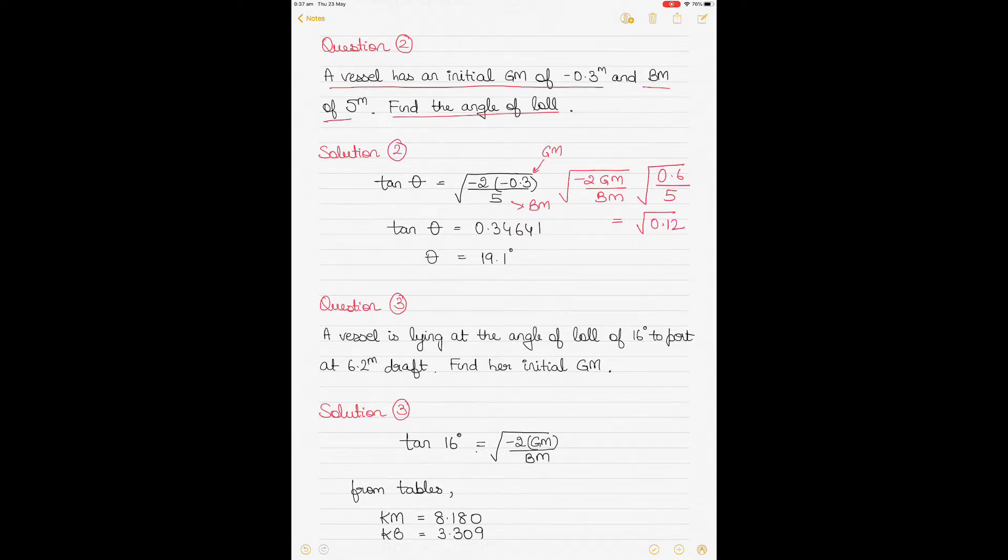This will lead to 0.6 divided by 5, which is equal to 0.12, and then under root of 0.12 will give you this value here, 0.34641. Then take tan on the other side, make it a tan inverse of this value, and you will get 19.1 degrees as your answer. I am just sticking to one decimal place. You can go to more if you want to. Depends on what your lecturer or what your assessor wants from you.